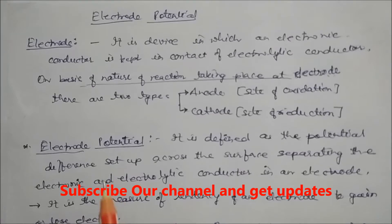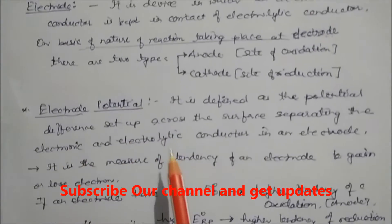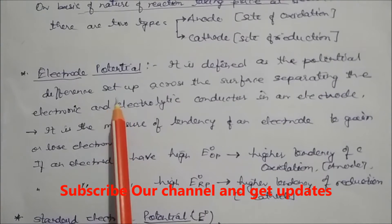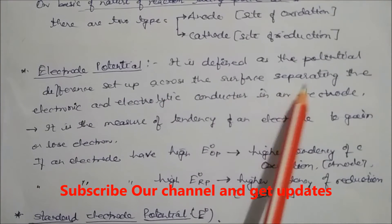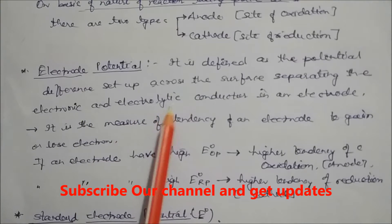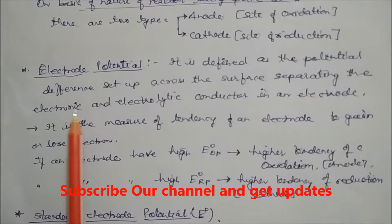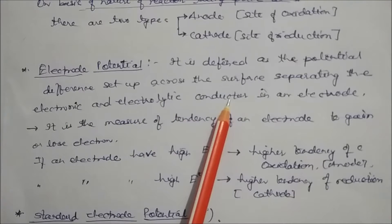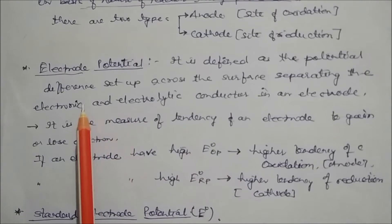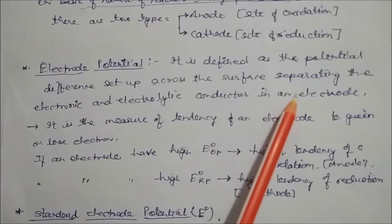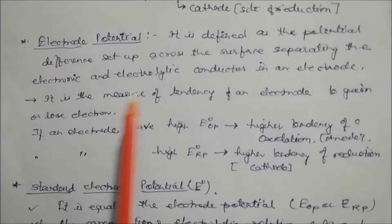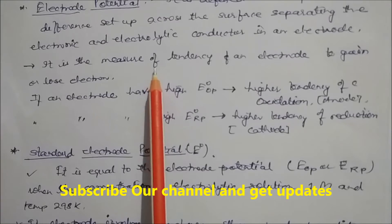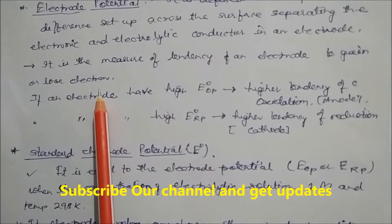Next, we define electrode potential. It is defined as the potential difference set up across the surface separating the electronic and electrolytic conductors in an electrode. The electronic conductor is a metal or non-metal, and the electrolytic conductor is the solution. There is an interface between them, and electrode potential measures the tendency of an electrode to gain or lose electrons.